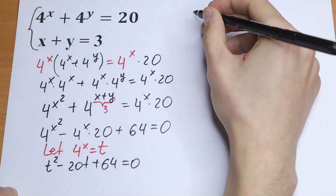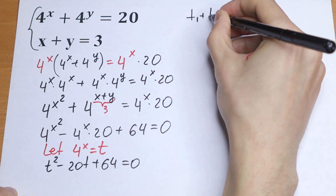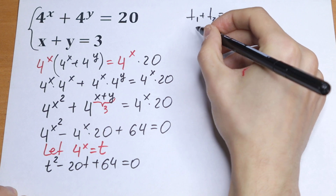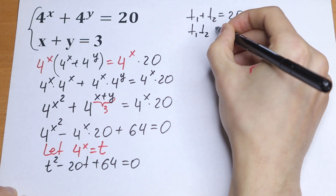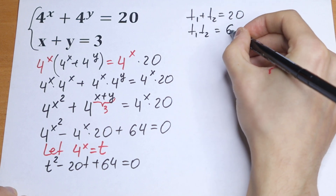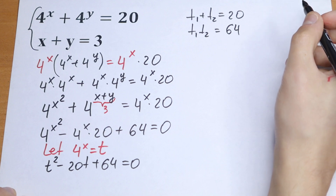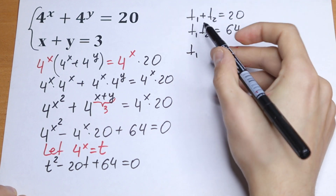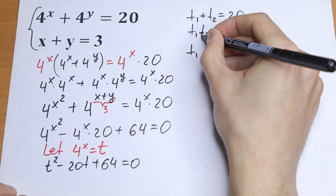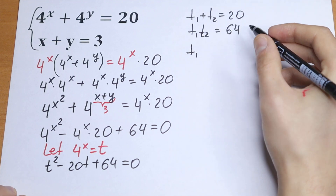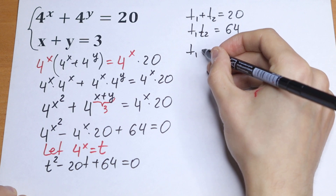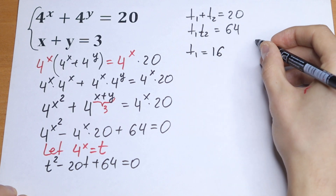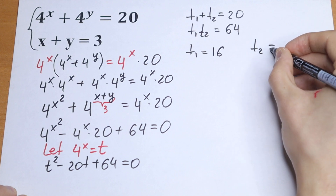How can we solve this? Using Vieta's theorem: t1 plus t2 equals 20, and t1 times t2 equals 64. So t1 equals 16 and t2 equals 4, since their product is 64 and their sum is 20.